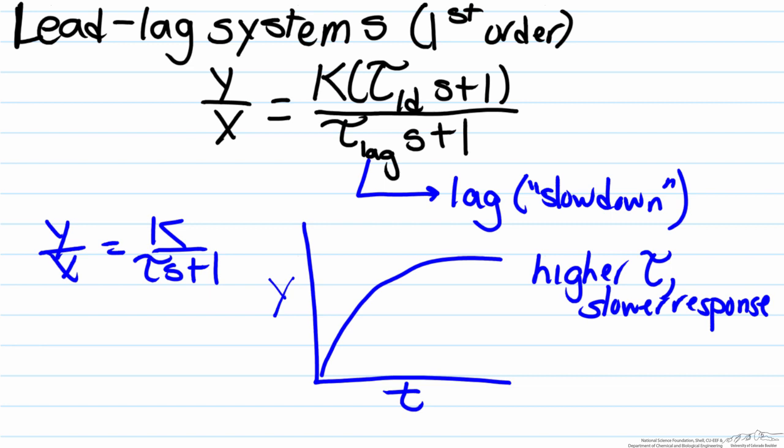Therefore, if you were to see a term with respect to s in the numerator, you would expect the opposite, the fact that its presence would be there to speed up the dynamics, which is the case, hence why it is referred to as a lead unit.